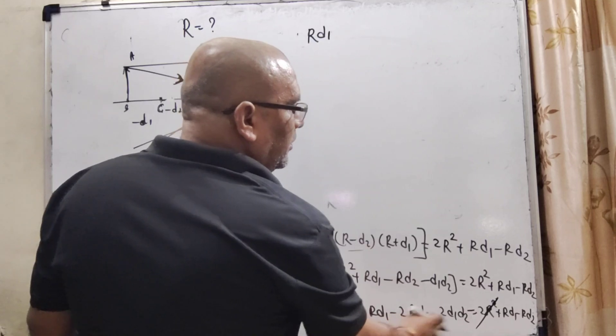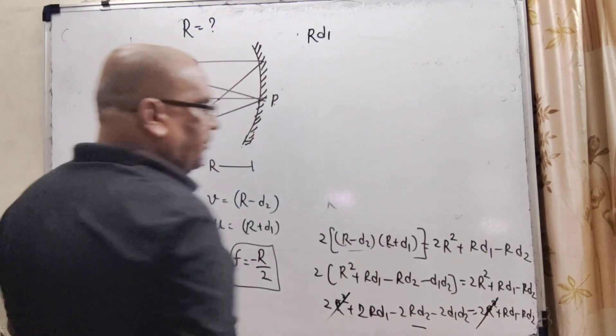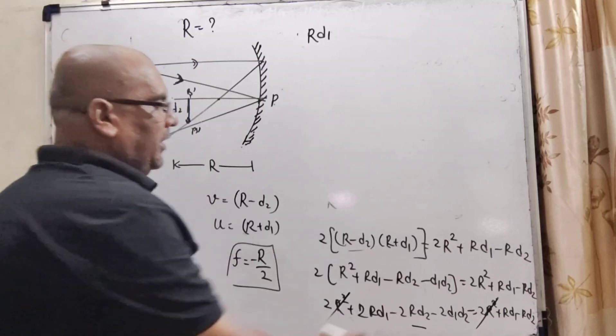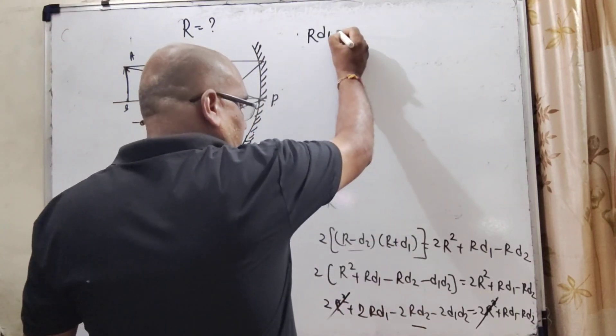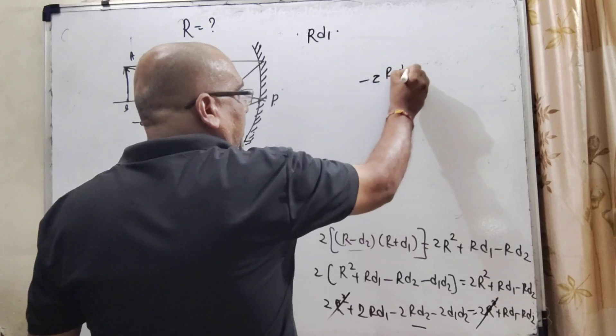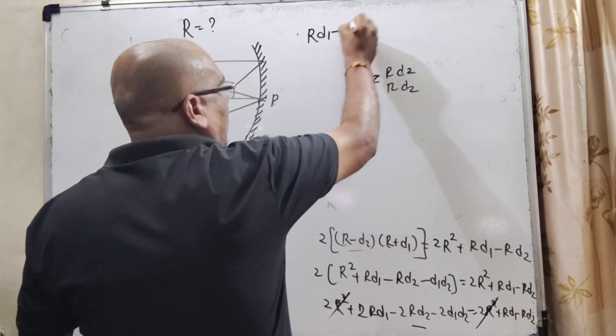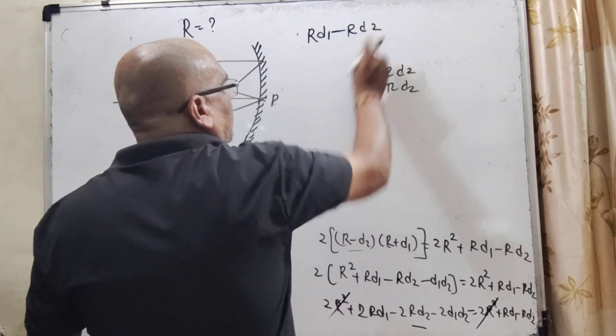Now, minus 2Rd2 and this minus Rd2 transposing to the left side now becomes plus. So, here, minus 2Rd2 plus Rd2. That is minus Rd2.